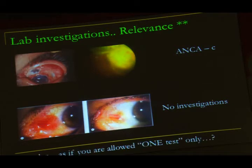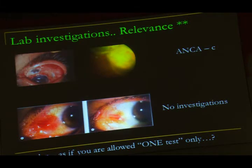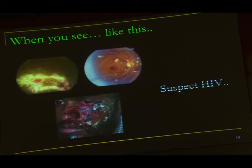It is important that investigations are relevant and ordered correctly. When you see a pattern suggesting HAV, you know which test to order. The interpretation depends on the usefulness of the test — how sensitive, specific, and reliable it is — and the population prevalence.